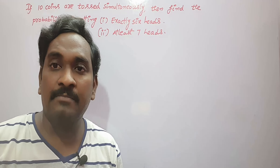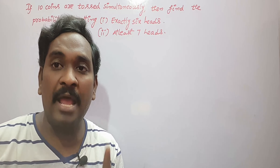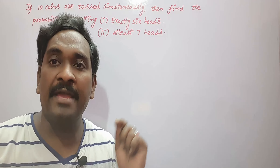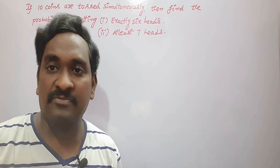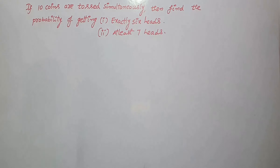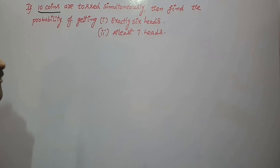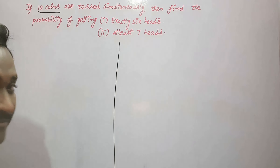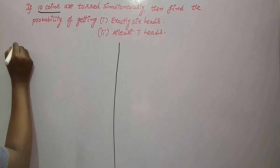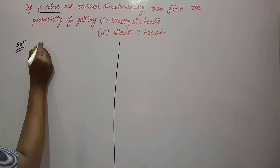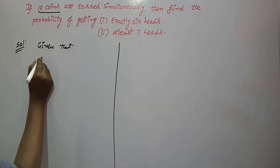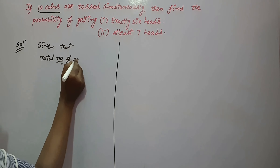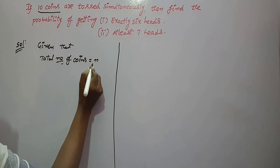We cannot apply the classical probability formula P(E) = m/n, or the n(E)/n(S) formula. Here, n is the number of coins used in this random experiment, so the total number of items — the total number of coins — is given to you.